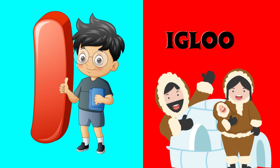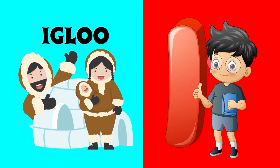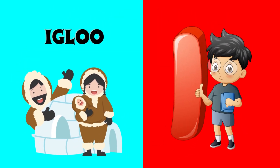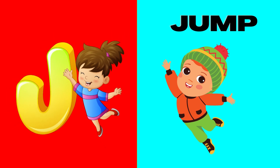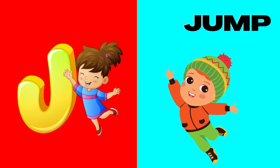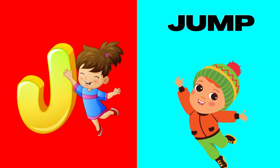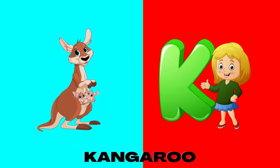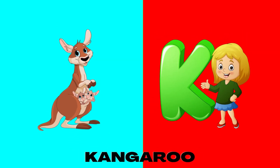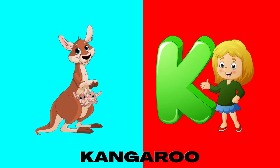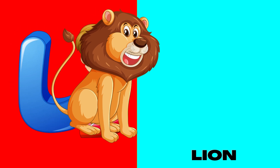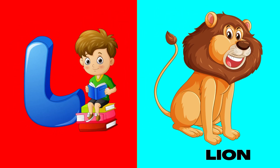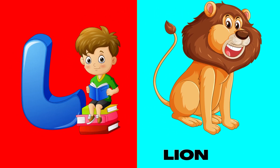I is for igloo, i-i-igloo. J is for jump, j-j-jump. K is for kangaroo, k-k-kangaroo. L is for lion, l-l-lion.